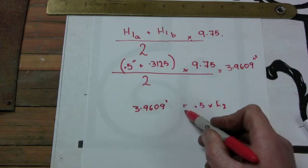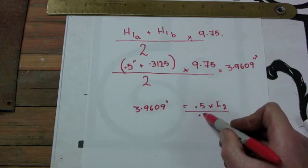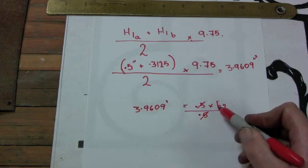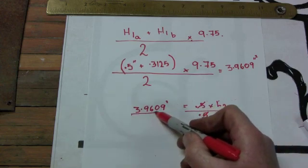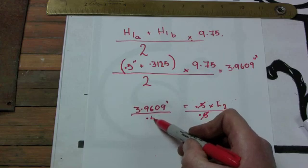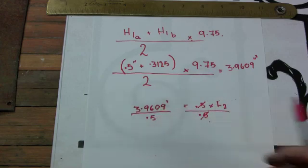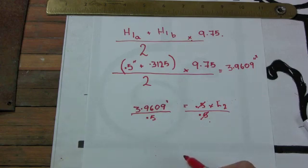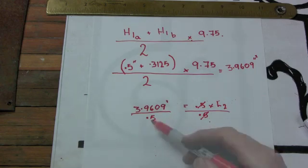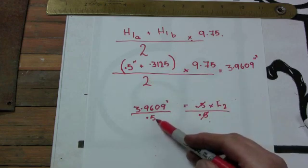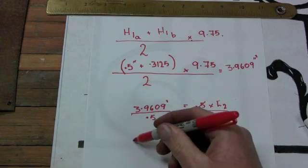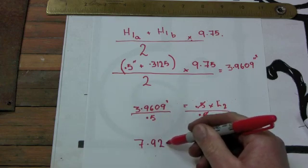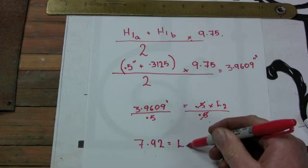So, if I take this and divide it by point five, those will cancel it out, leaving that there. But whatever I do to one side, I have to do to the other side. So I need to take that number and divide it by point five. I'll come back as soon as I've been to my calculator. I already could have done that, because it's just the opposite to that. So I've actually got seven point nine two inches equals L2.